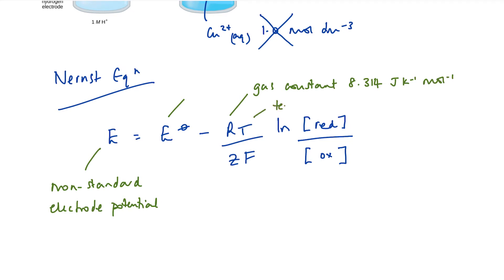T is the temperature in Kelvin. Z is the number of moles of electrons as per the half equation. And F is Faraday's constant, which is essentially the charge carried by one mole of electrons. And that's 96,500 coulombs per mole.